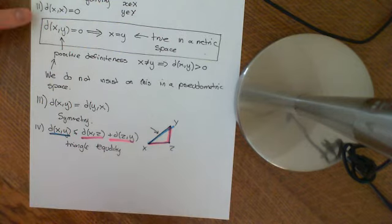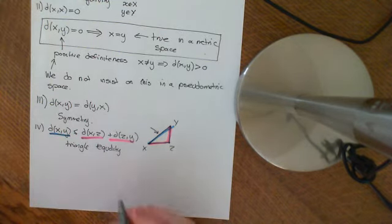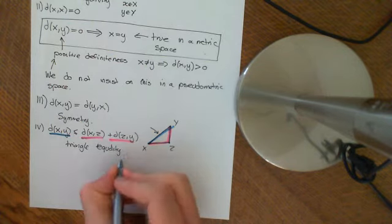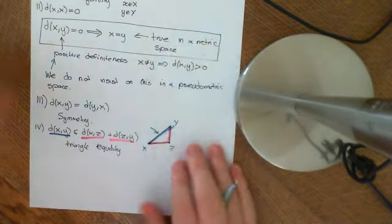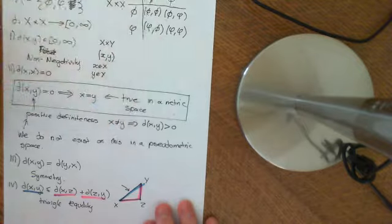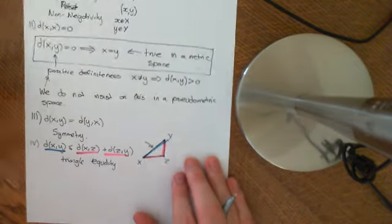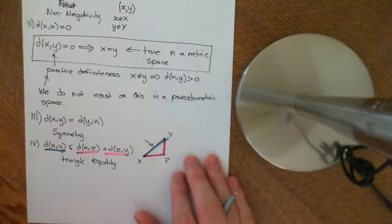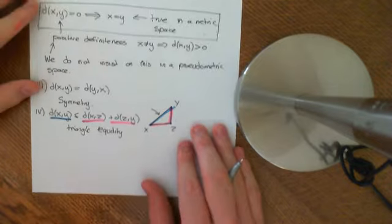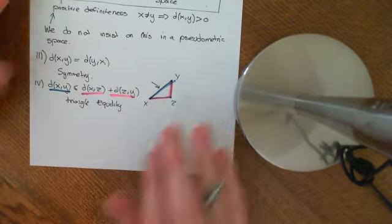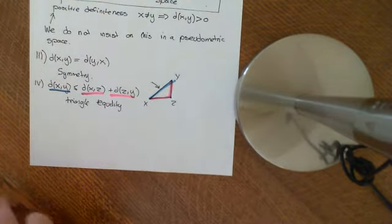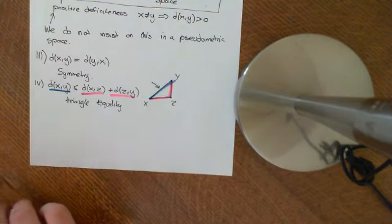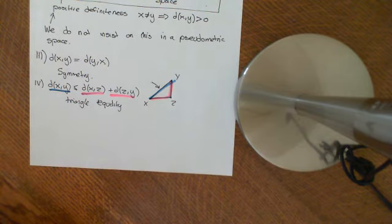So the only axiom not true in a pseudometric space is positive definiteness — part two of axiom two. The off-diagonal terms can equal zero in this Cartesian product table. Now let's look at an example of a pseudometric space.